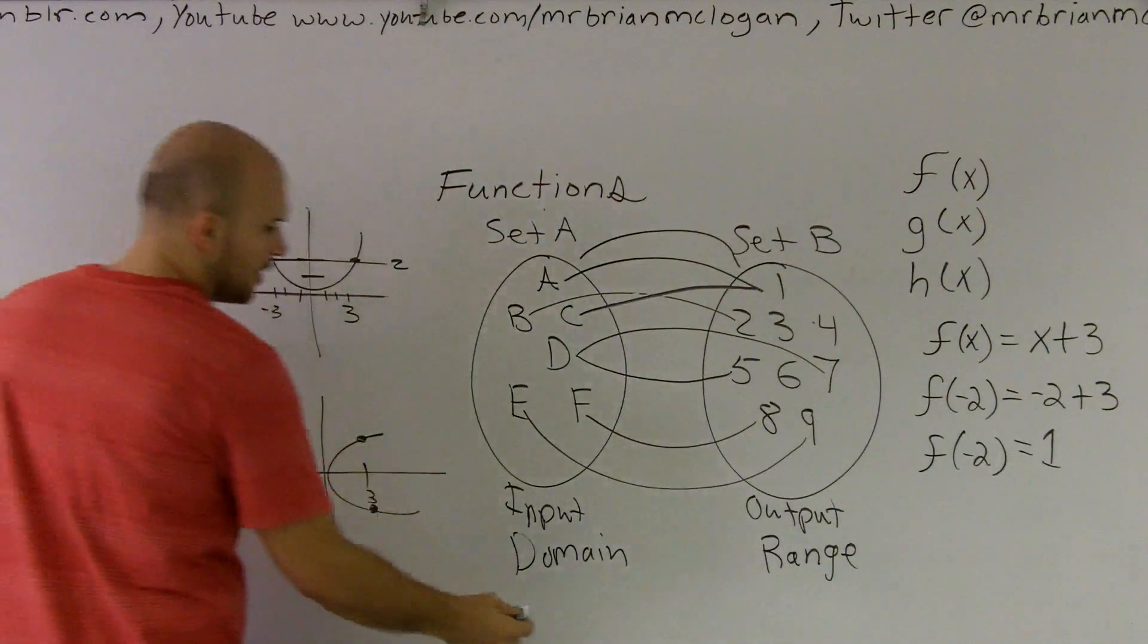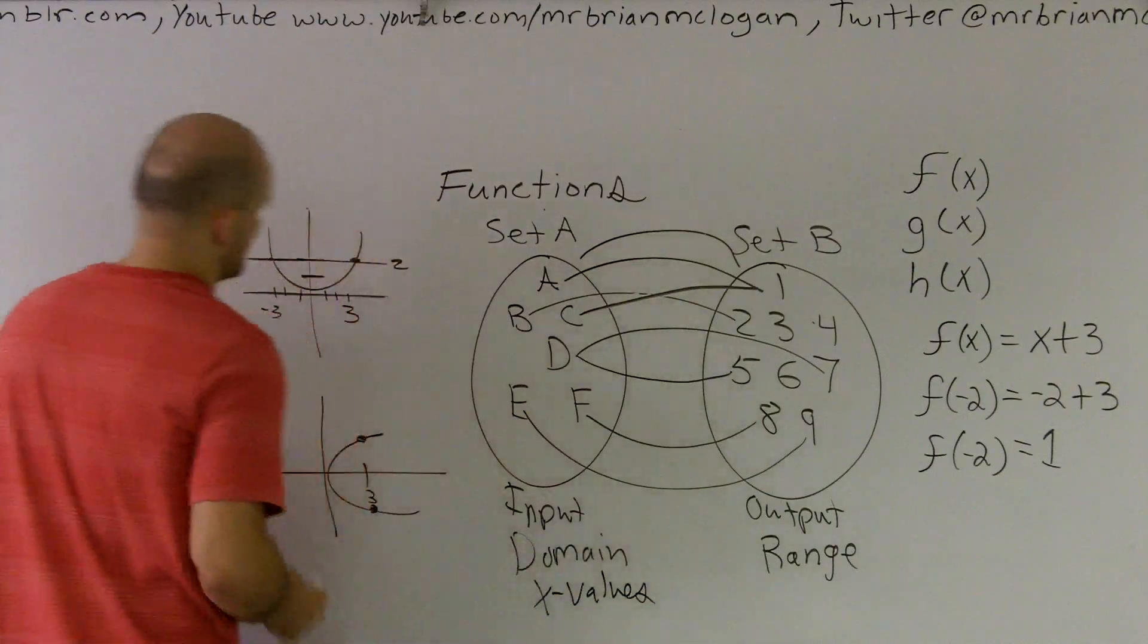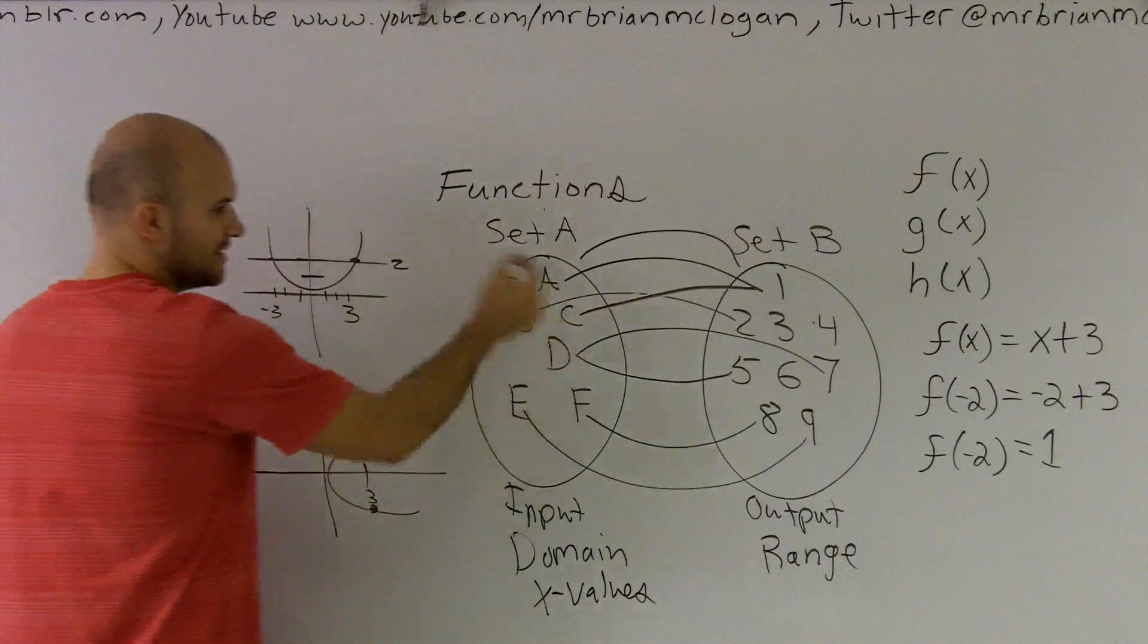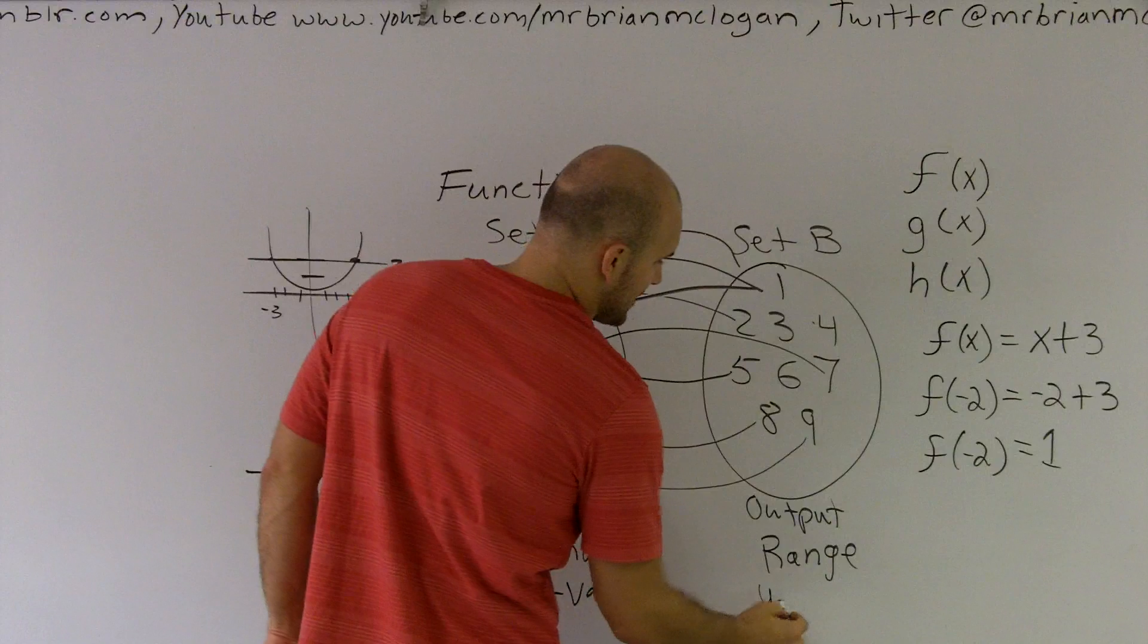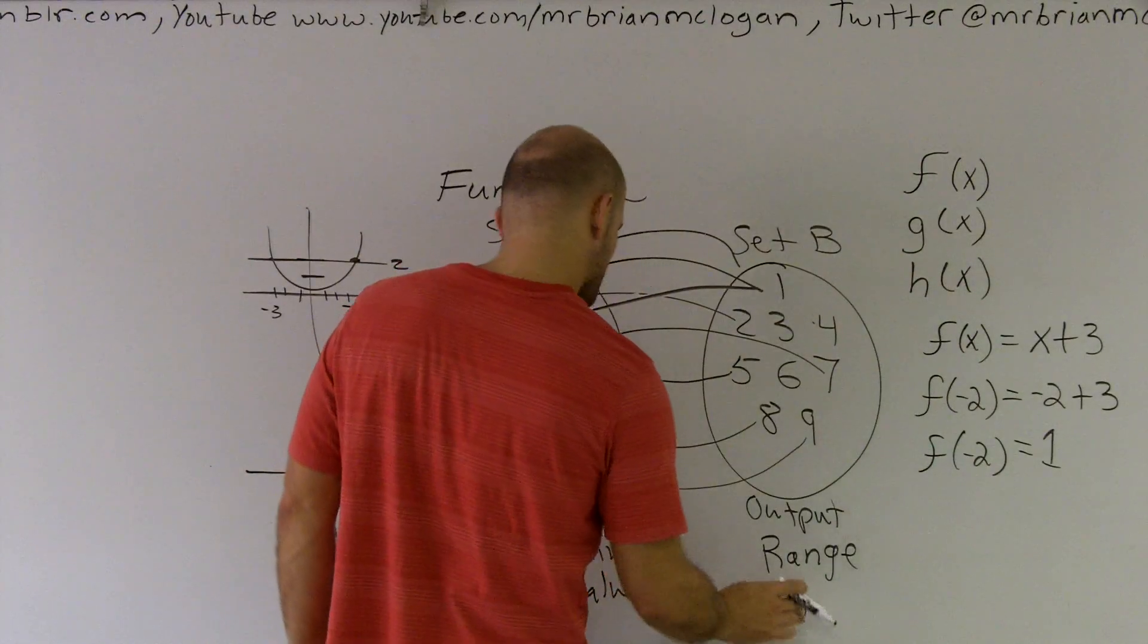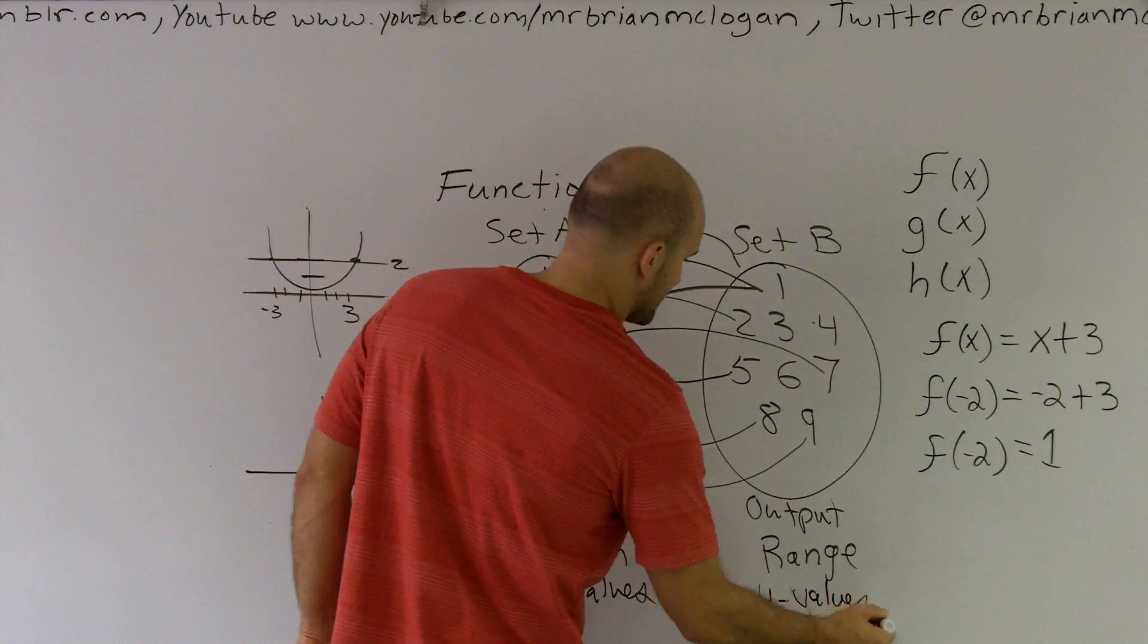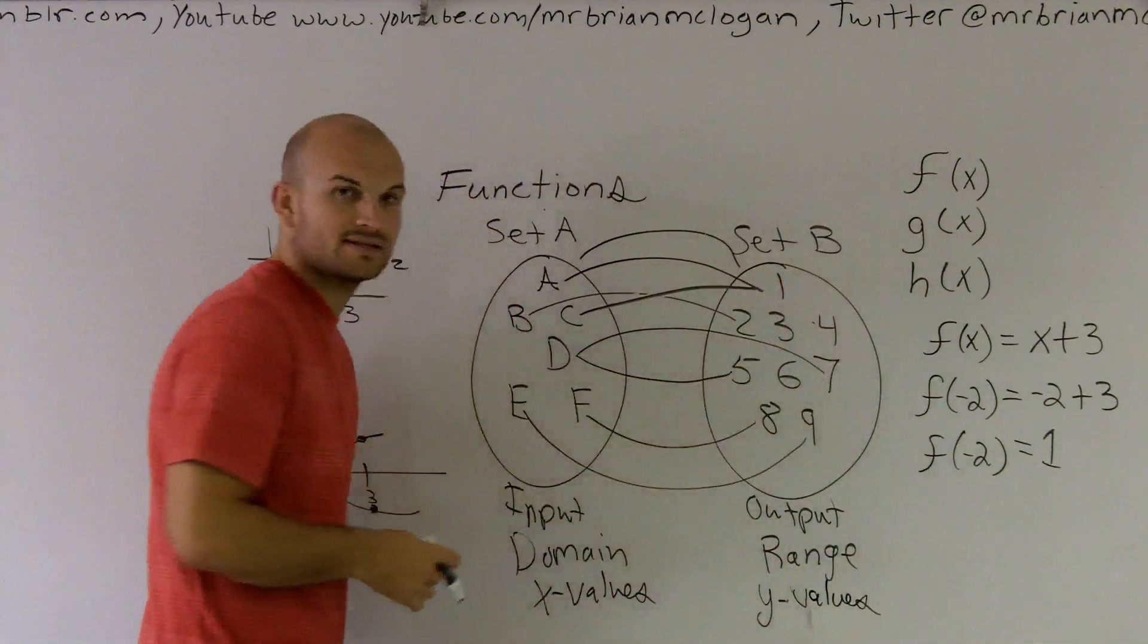My domain is the value of all my x values. For this function, it would be all your numbers. For the set, it's all the elements inside my set. My range is my y values when dealing with a graph. However, for this set, it's all the elements inside that set.